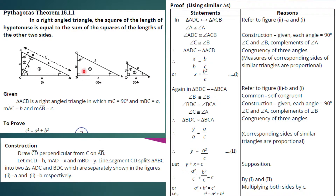Since three angles are congruent, triangle ADC is similar to triangle ACB. Therefore, the corresponding sides are proportional, giving us x over b is equal to b over c. The measures of corresponding sides of similar triangles are proportional. Solving for x, we multiply both sides to get x is equal to b squared over c.